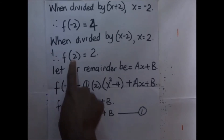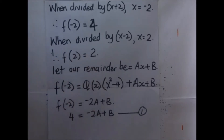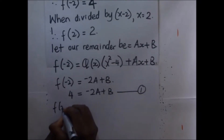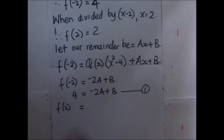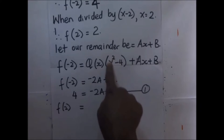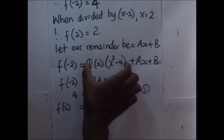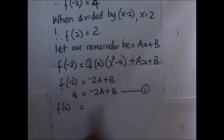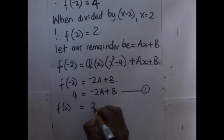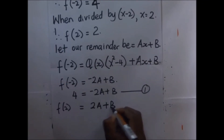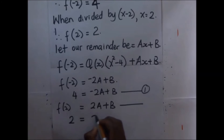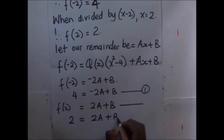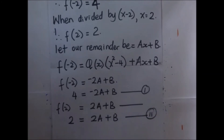For the second case when X equals 2: we put 2 into X squared minus 4, and 4 minus 4 equals 0, so that whole term dies. We remain with 2A plus B, and since f of 2 equals 2, we get 2A plus B equals 2. That's equation 2.